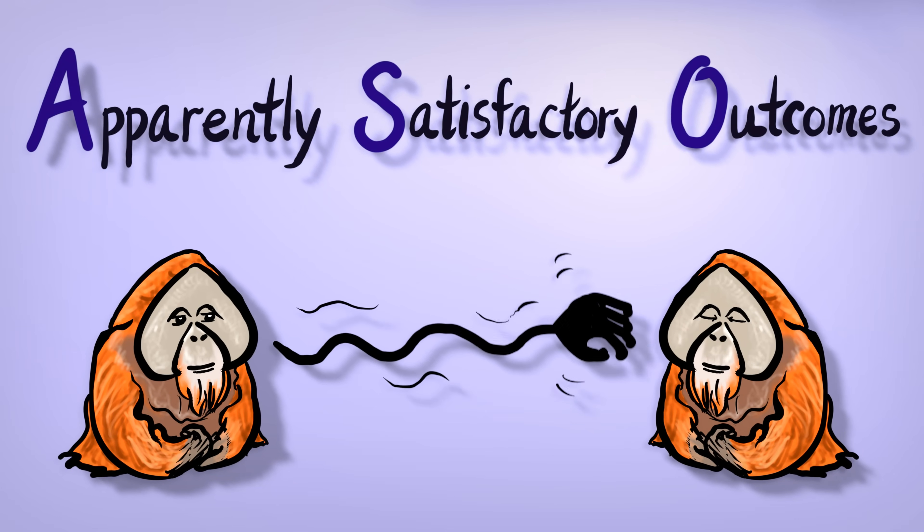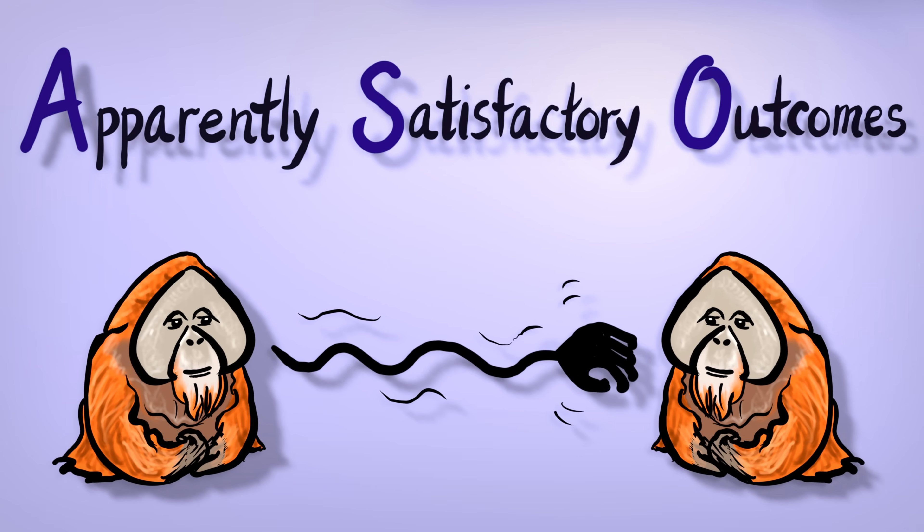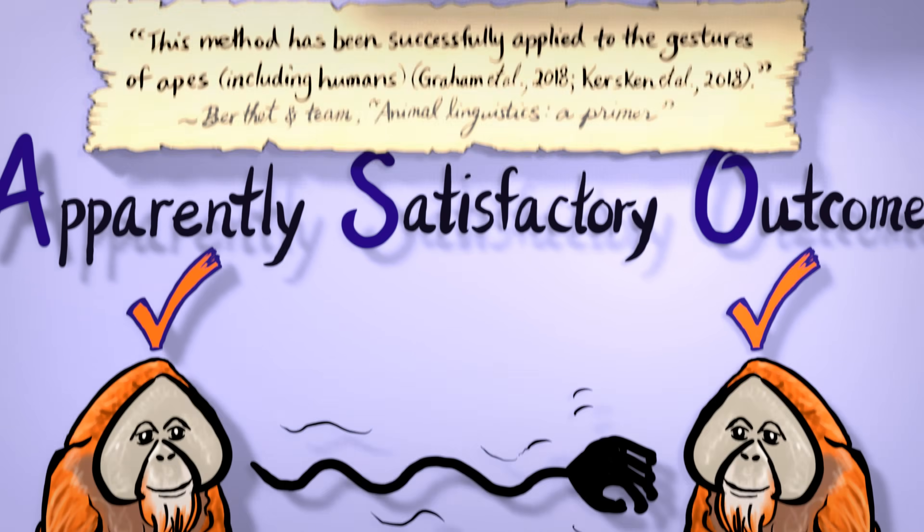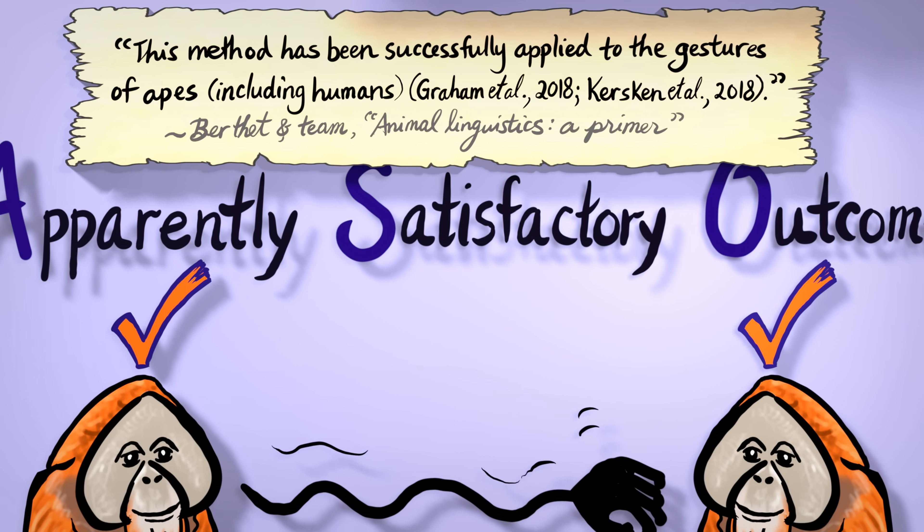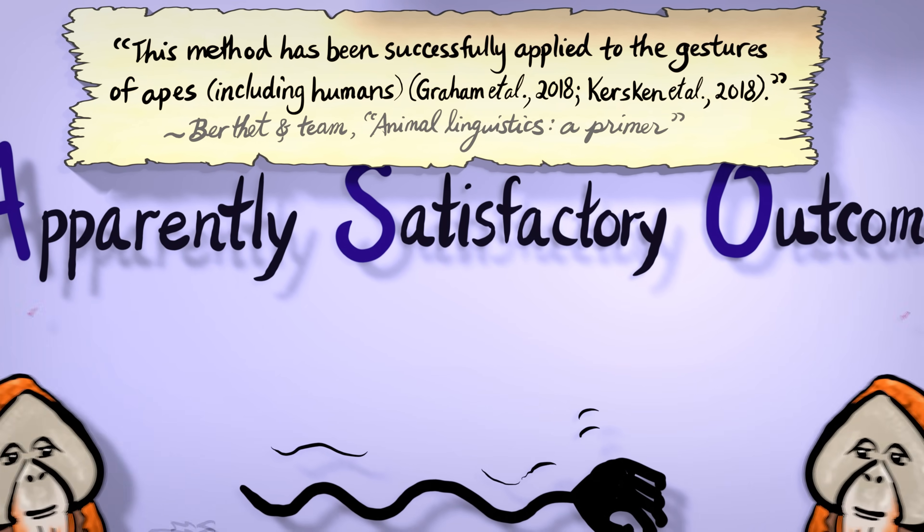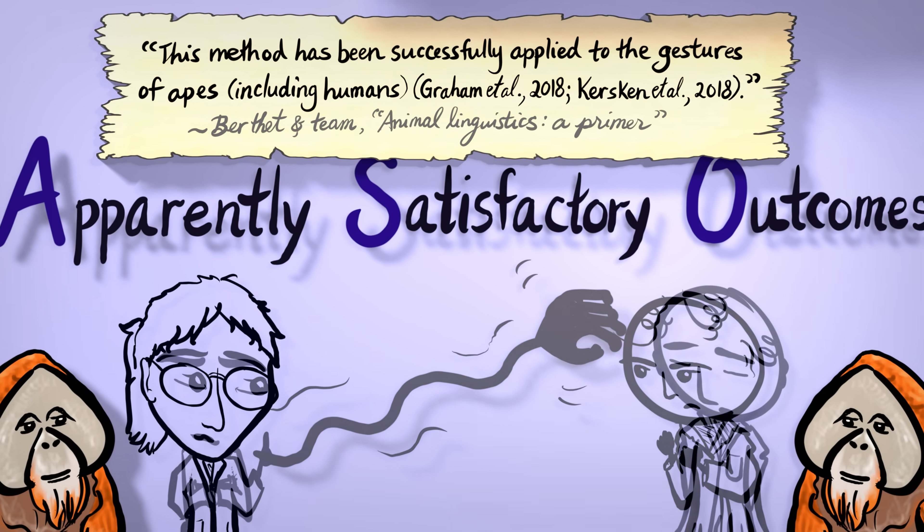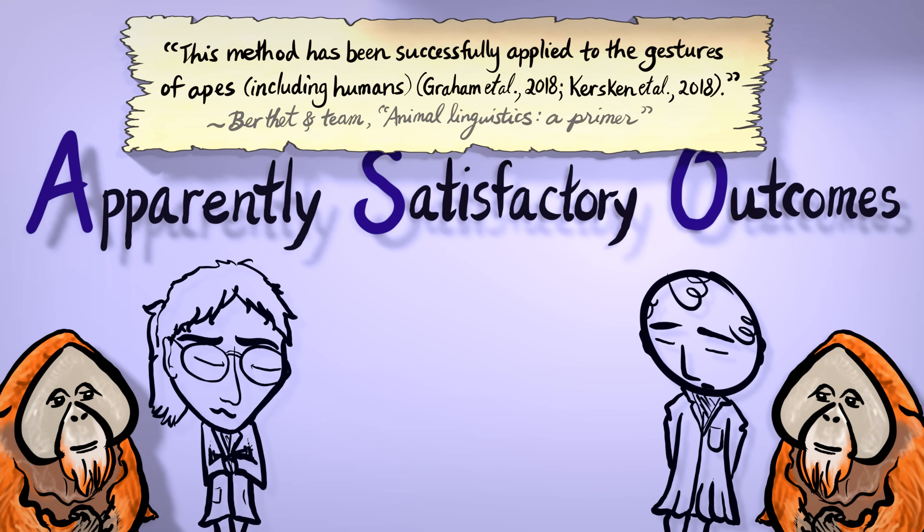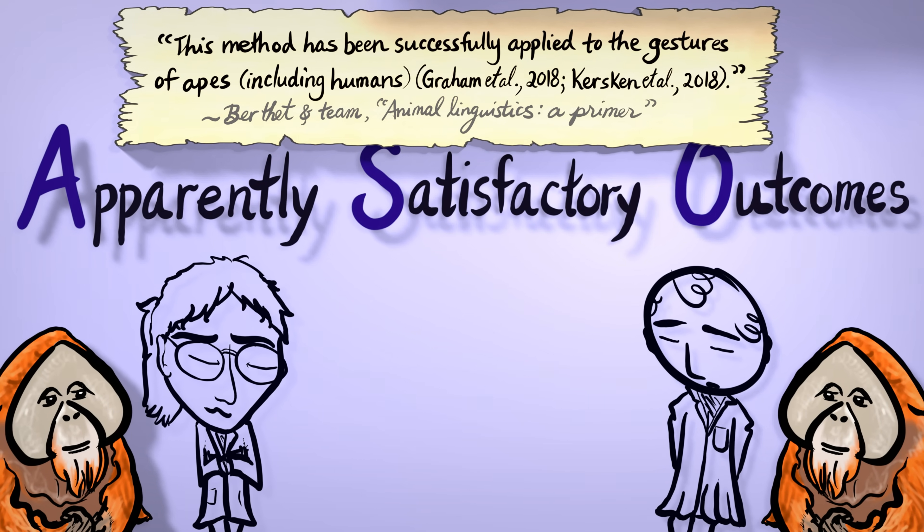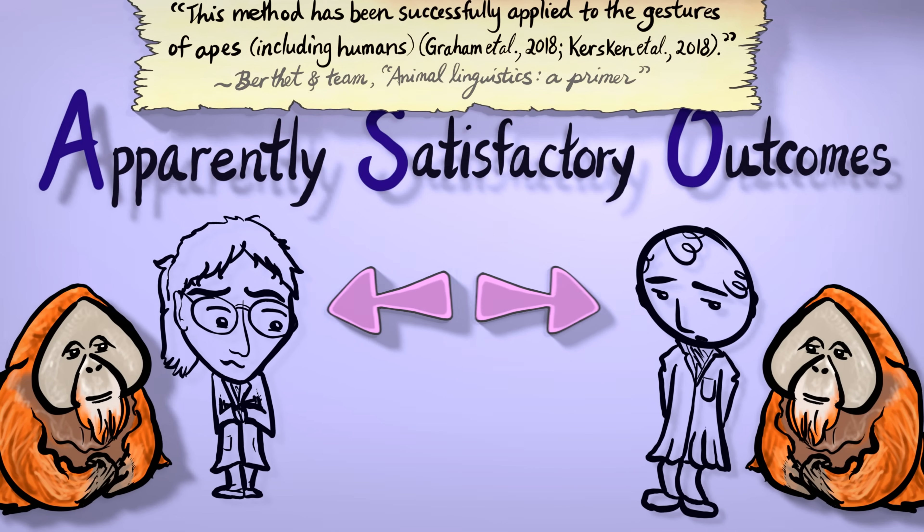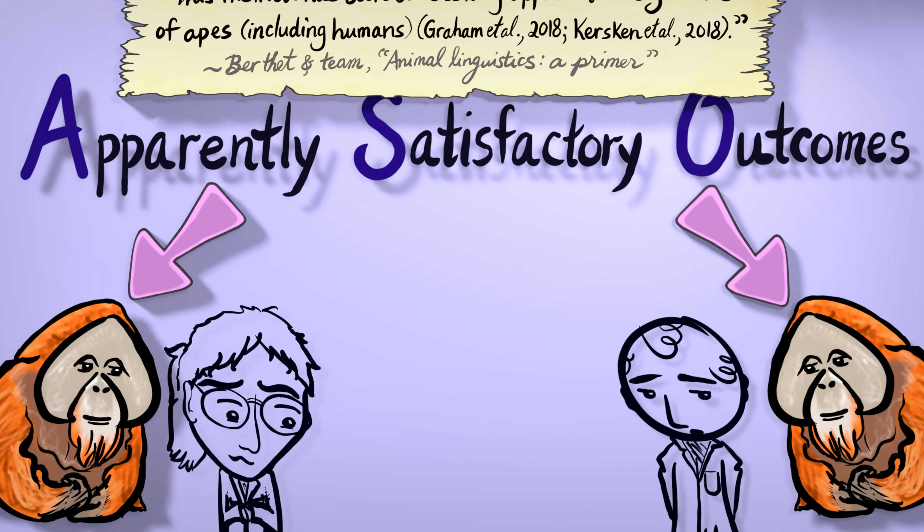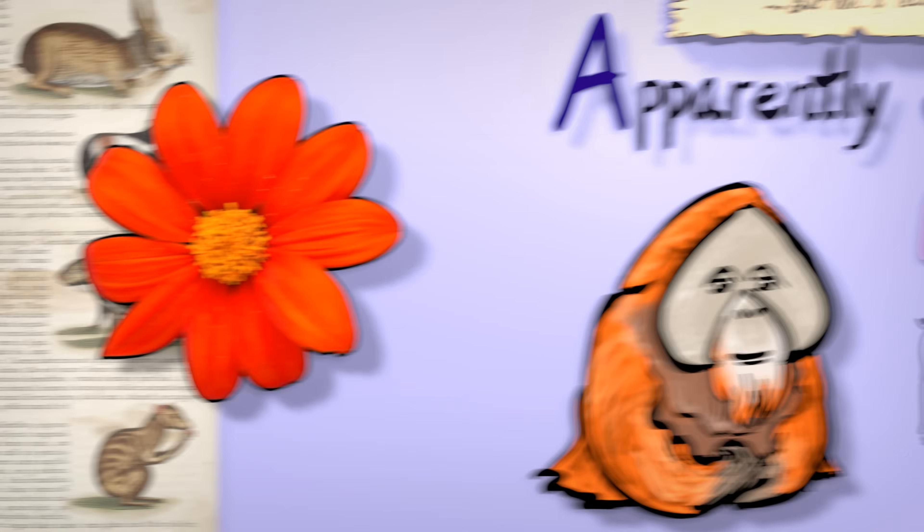Think back to when I mentioned orangutans and apparently satisfactory outcomes. One paper reports the successful use of ASOs to infer human meaning, too. But orangutan ASOs were limited to commands, and humans aren't. Be fair. Test you and me on declaratives. And our outcomes might likewise be apparently unsatisfactory. ASOs mostly detect imperatives. So we bumped up against a methodological limit, not an orangutan limit.